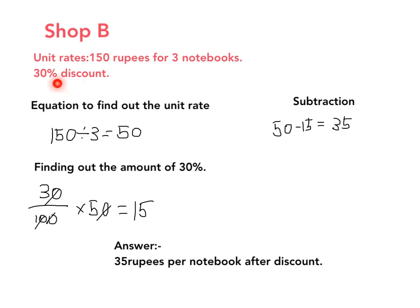In shop B, the equation to find the unit rate is 150 divided by 3, which gives us 50. To find out the amount of 30%, the equation is 30 over 100 times 50. We cancel the zeros and get 3 and 5, which gives 15. We subtract 15 from 50 and get 35. So the answer is 35 rupees per notebook after discount.